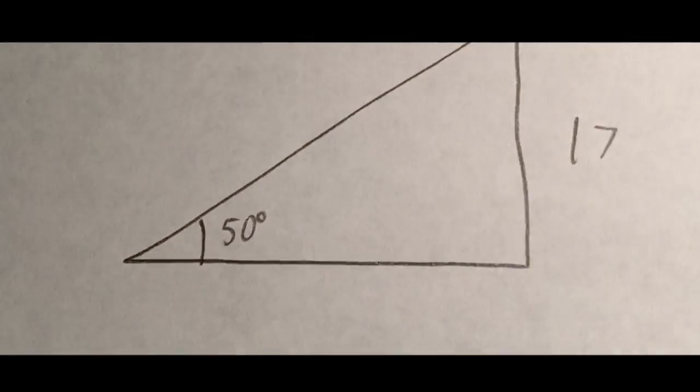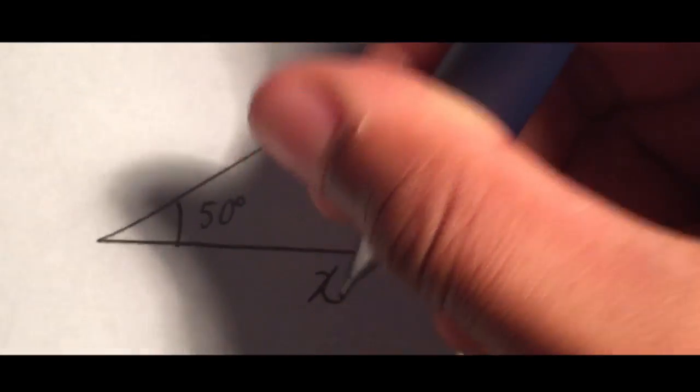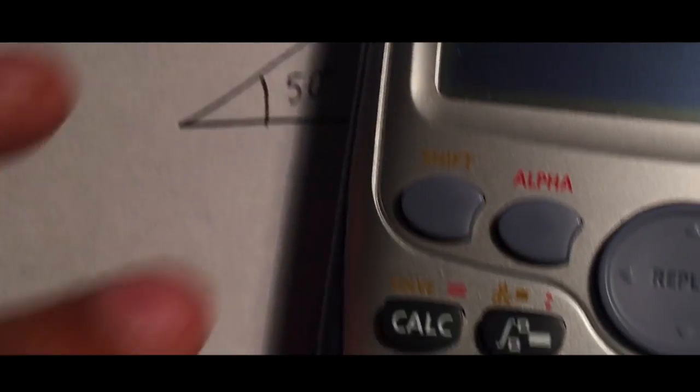And what if we knew the measure of this side over here? Could we find the other one? Just listen in here. Take out the calculator, put in the angle measure, two types of shift and then tangent. Now you're halfway to the treasury.